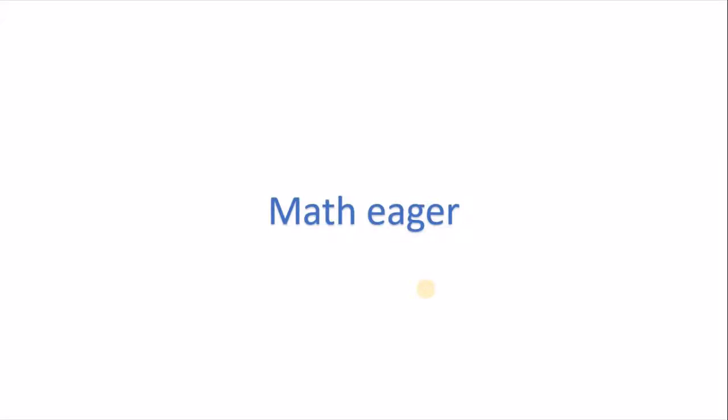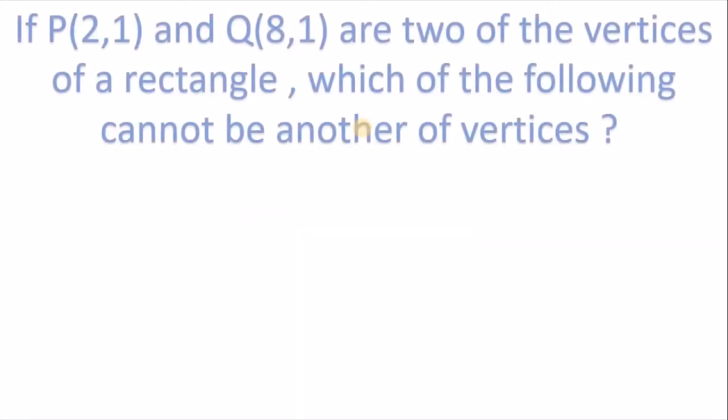Welcome to my channel, Math Baker. In this video, we have to choose the correct answer in 45 seconds. Look at this question: If P(2,1) and Q(8,1) are two of the vertices of a rectangle, which of the following cannot be another of vertices?